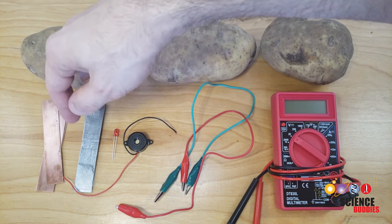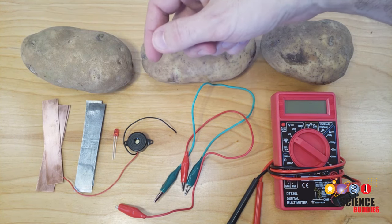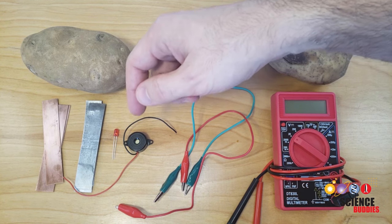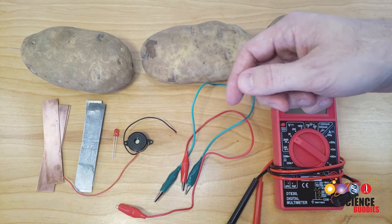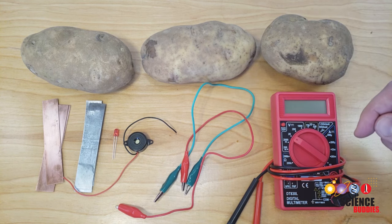That kit includes copper and zinc electrodes that you will need to make the battery, LEDs and a buzzer that you can power with the battery, alligator clips that make it easier to make the connections, and a multimeter to measure your battery's output.